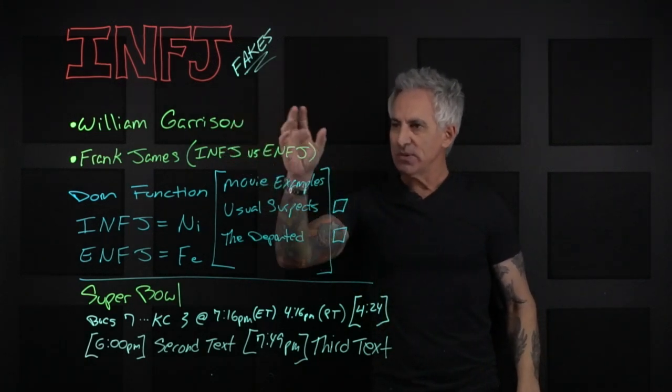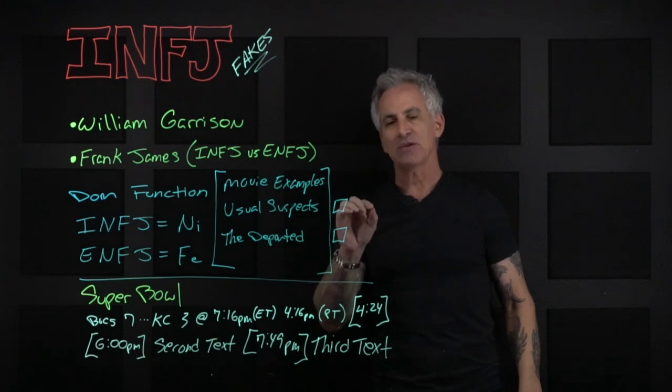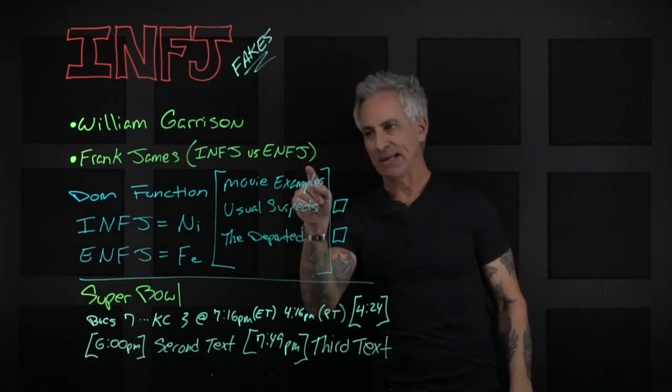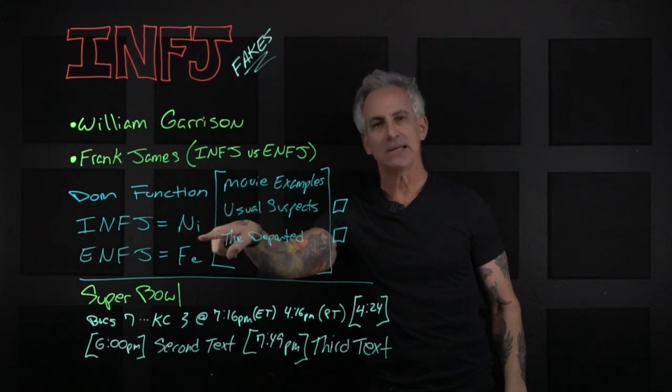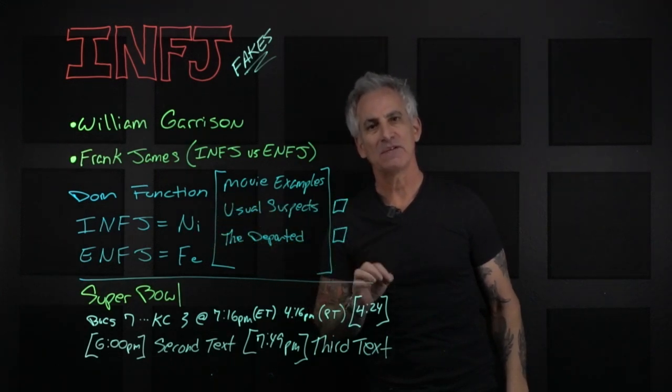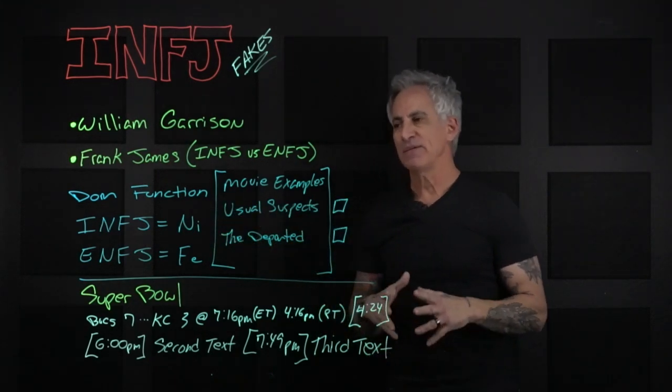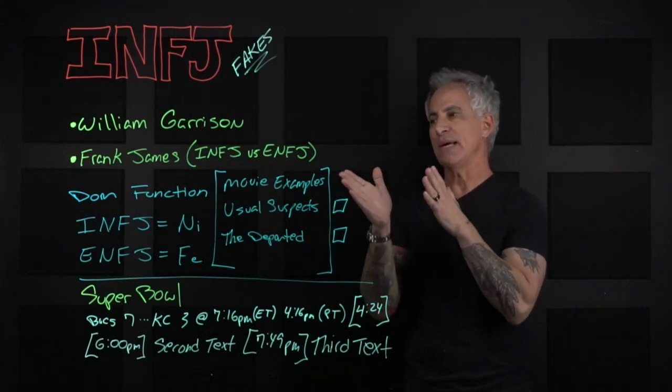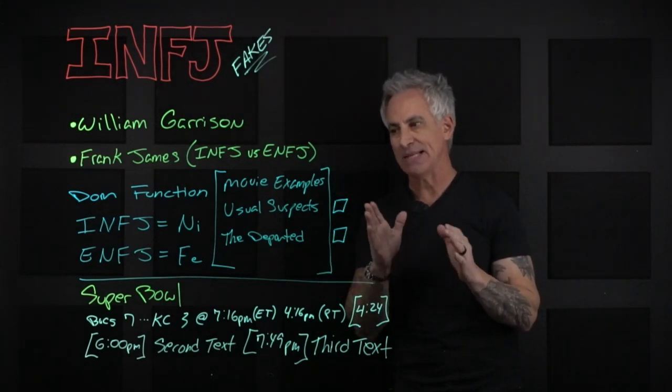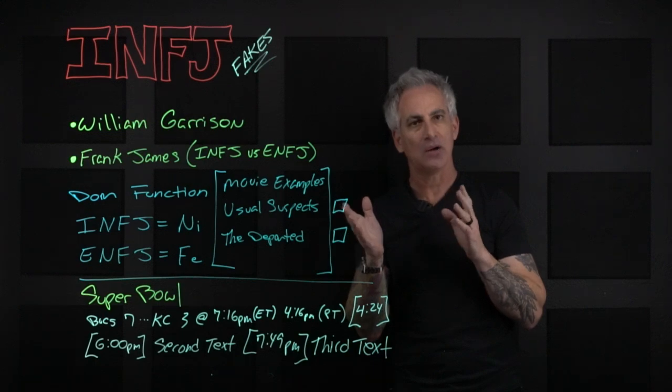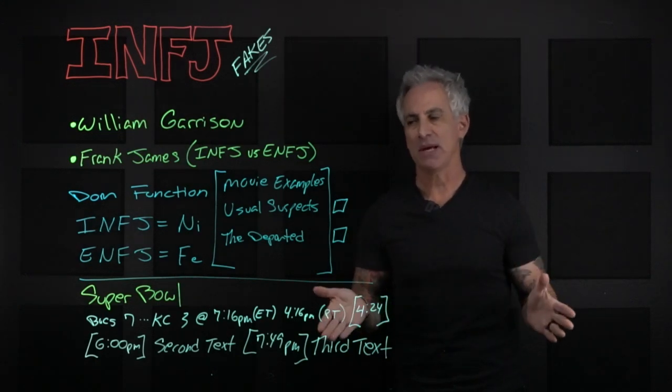Okay, all right. What Frank James discusses in this video is the difference between the dominant function of the INFJ being introverted intuition and the ENFJ being extroverted feeling. He makes a very good example of what the INFJ does during a movie and the ENFJ does during a movie. And basically, in a nutshell, this is it.